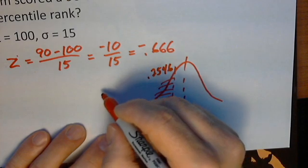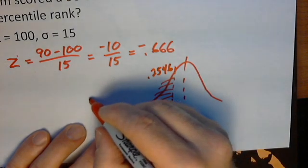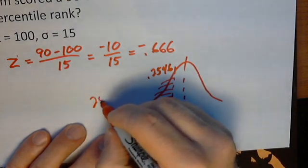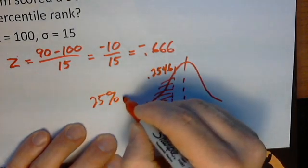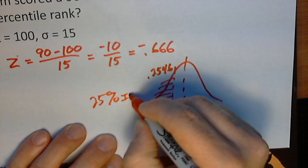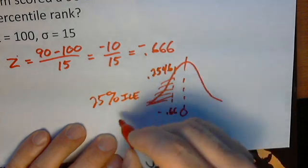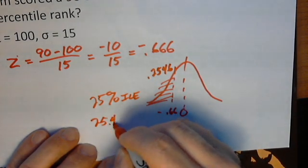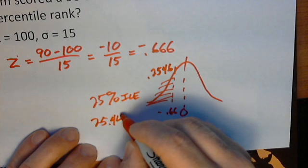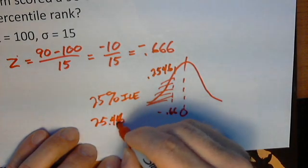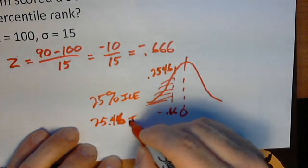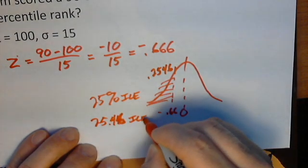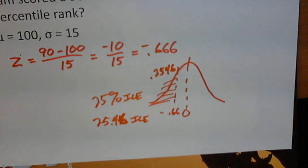So we can say that Sam scored roughly at the 25th percentile, or more precisely the 25.46 percentile. This should help you with this part of the homework that you have to get through.